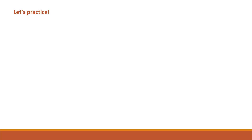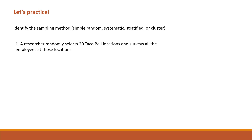Before we move on to our last sampling method, let's practice what we've learned so far. A researcher randomly selects 20 Taco Bell locations and surveys all the employees at those locations — what sampling method is that? That's the cluster sampling we just learned. In this case, clusters are the Taco Bell locations. Instead of going to all locations and surveying only a few individuals in each, the researcher randomly selected 20 locations out of all of them and surveyed all employees in those locations.